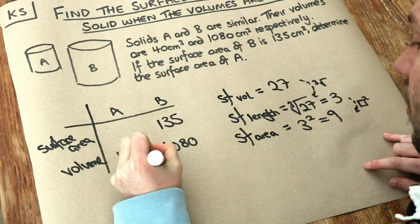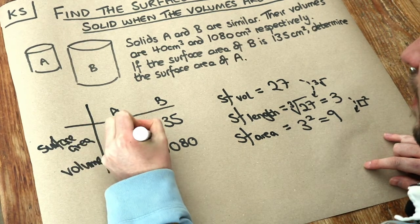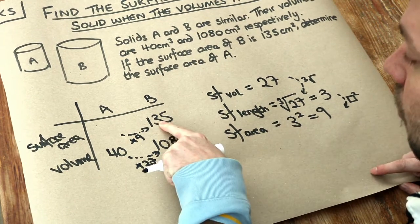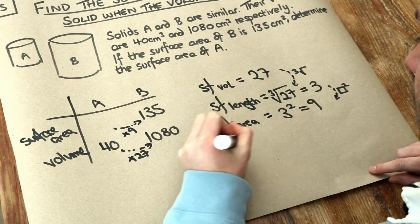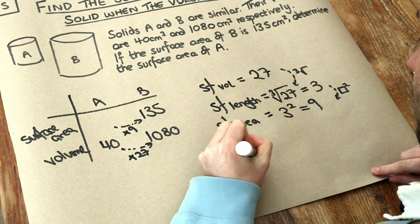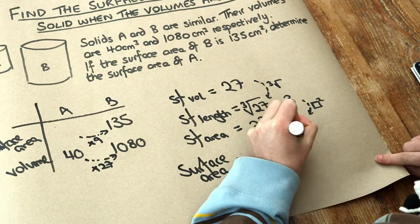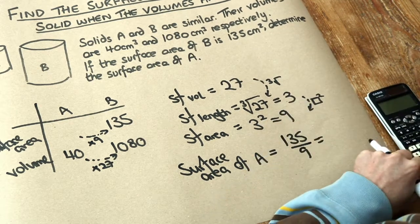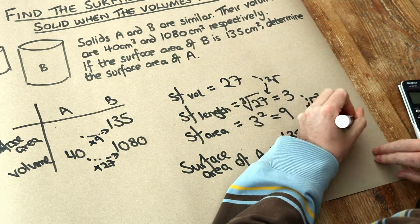So the scale factor of volume is 27 and we worked out the scale factor of surface area is 9. What we need to do now is just do 135 divided by 9 to get the surface area of A. So the surface area of A is equal to 135 divided by 9, and that gives us 15 centimeters squared, ensuring we put the correct unit.